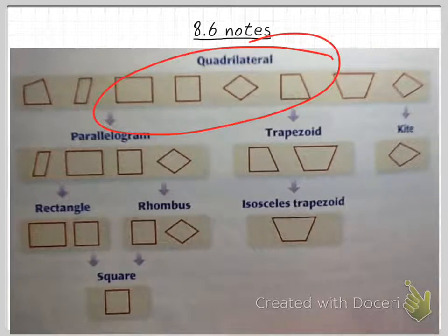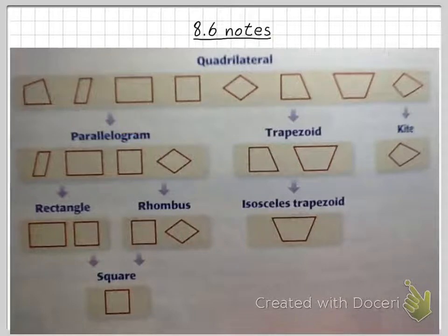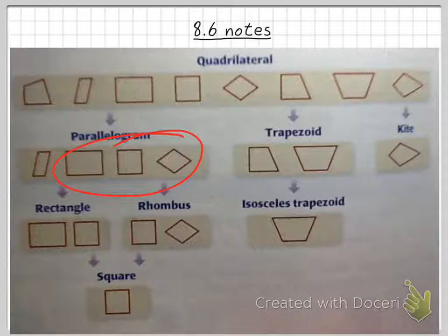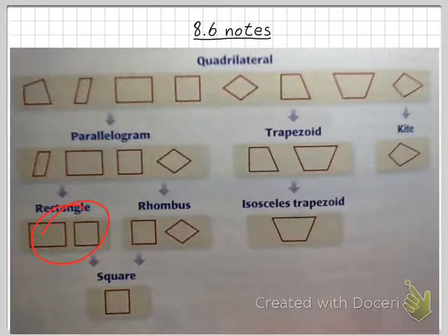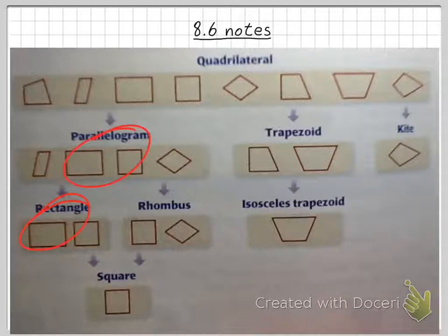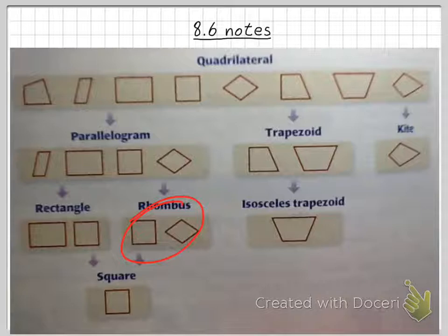We're starting off with a quadrilateral — a four-sided figure. Then it gets more specific: a parallelogram, which is a quadrilateral with both pairs of opposite sides parallel. Getting more specific, we have a rectangle, which is a parallelogram with four right angles. All rectangles are parallelograms. A rhombus is a parallelogram with four congruent sides, and all rhombuses are parallelograms as well.